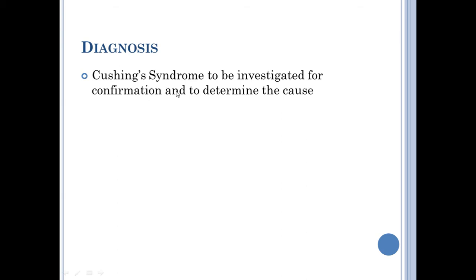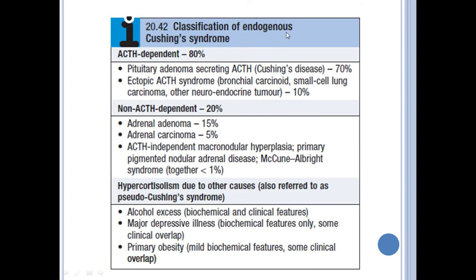The diagnosis is Cushing syndrome, but we need to investigate further to confirm and determine the cause. The classification of endogenous Cushing syndrome: ACTH-dependent causes account for 80%, non-ACTH-dependent causes for 20%, and there is hypercortisolism due to other causes referred to as pseudo-Cushing syndrome. ACTH-dependent causes include pituitary adenoma secreting ACTH — called Cushing's disease — or ectopic ACTH syndrome, for example bronchial carcinoma. Non-ACTH-dependent causes include adrenal adenoma or carcinoma, or ACTH-independent macronodular hyperplasia. Pseudo-Cushing syndrome includes alcohol-induced pseudo-Cushing, major depressive illness, or primary obesity.